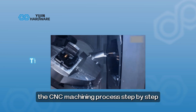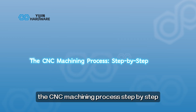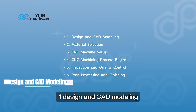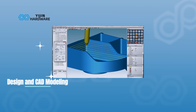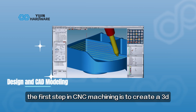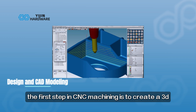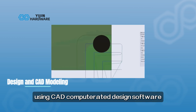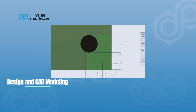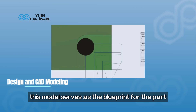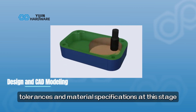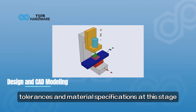The CNC machining process, step by step. Step one: design and CAD modeling. The first step in CNC machining is to create a 3D model of the part using CAD — computer-aided design software. This model serves as the blueprint for the part. Engineers input all the dimensions, tolerances, and material specifications at this stage.